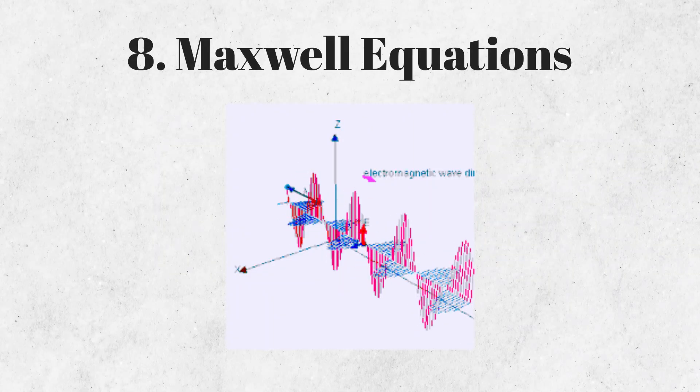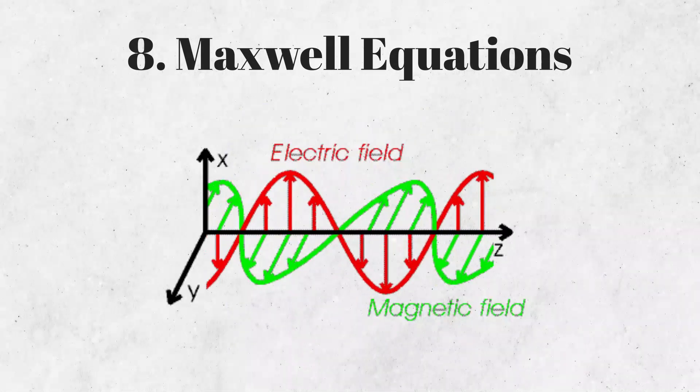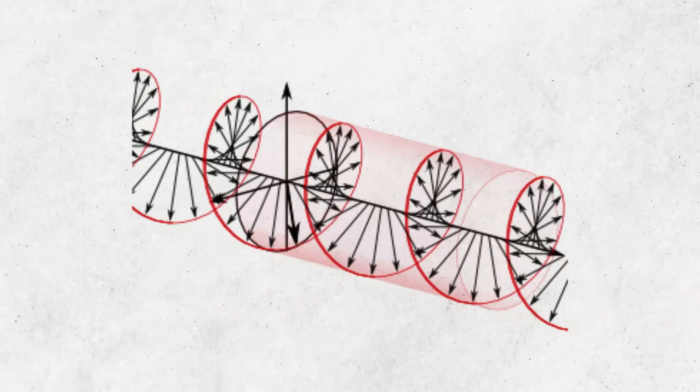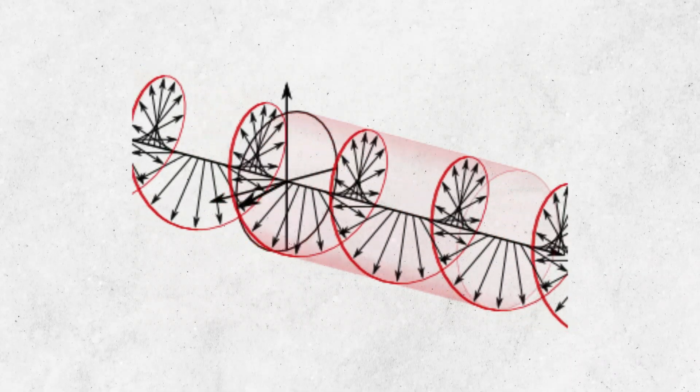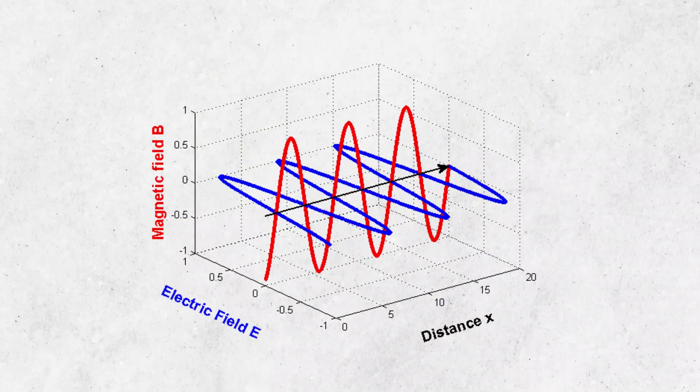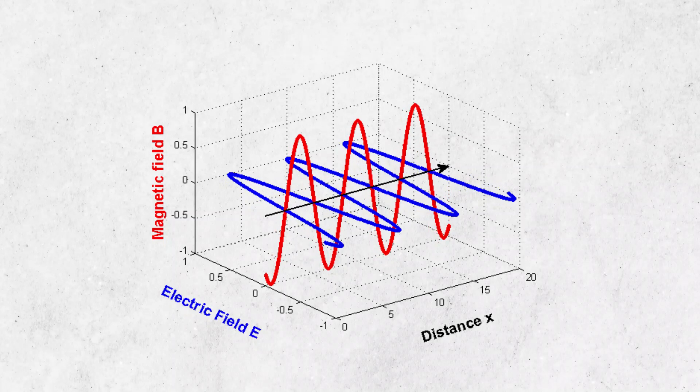The Maxwell equations are a set of four equations that describe the behavior of electromagnetic fields. They form the foundation of classical electromagnetism and are widely used in fields such as electrical engineering and physics.